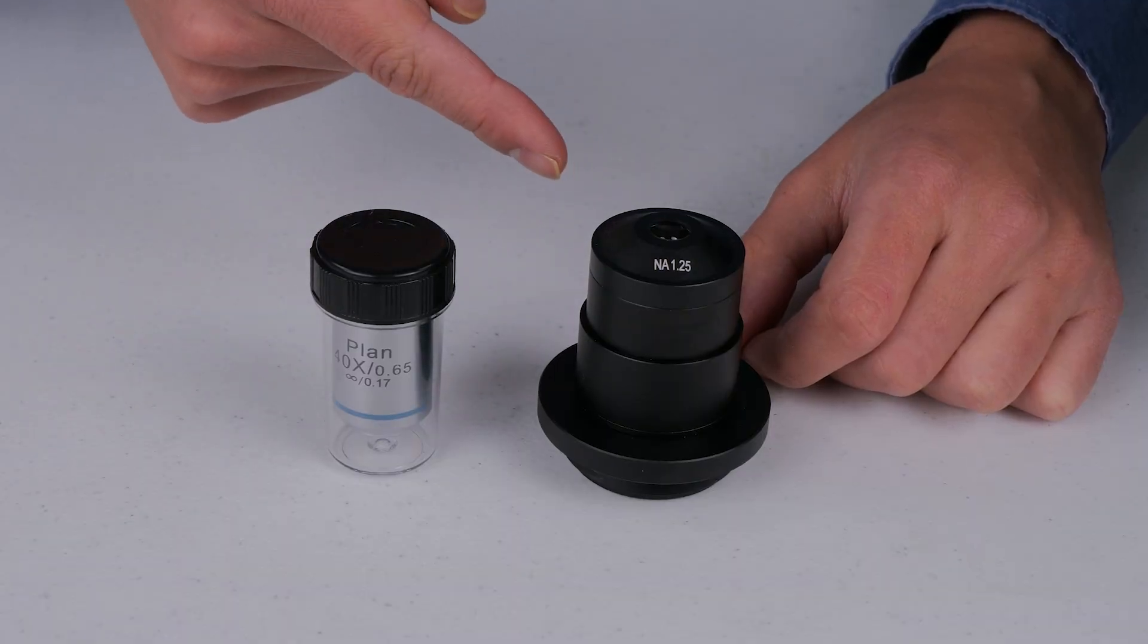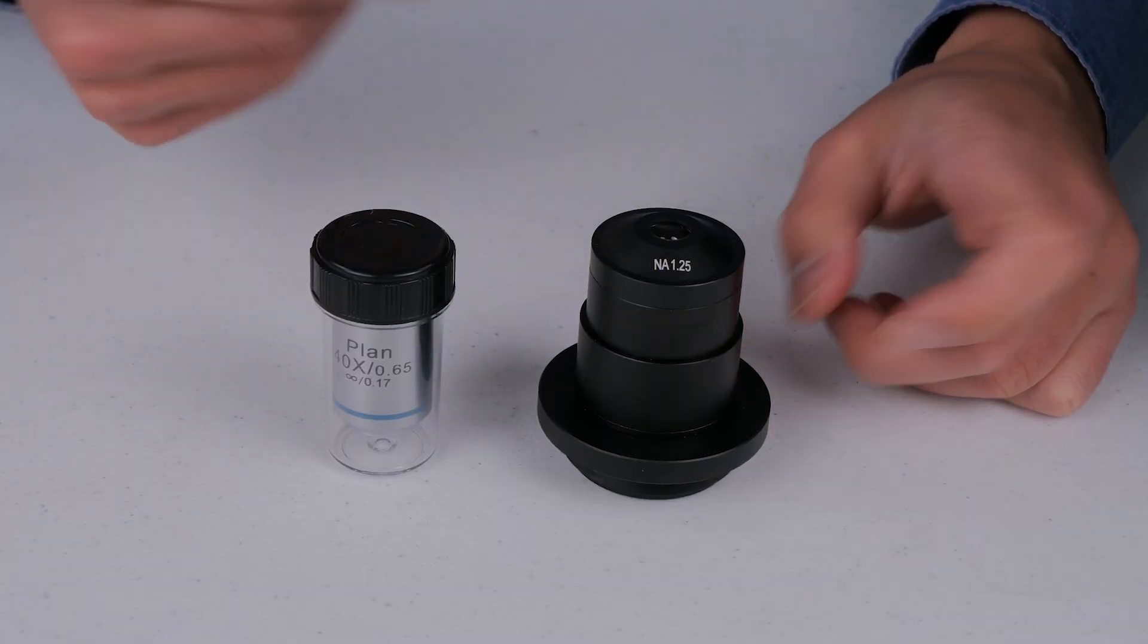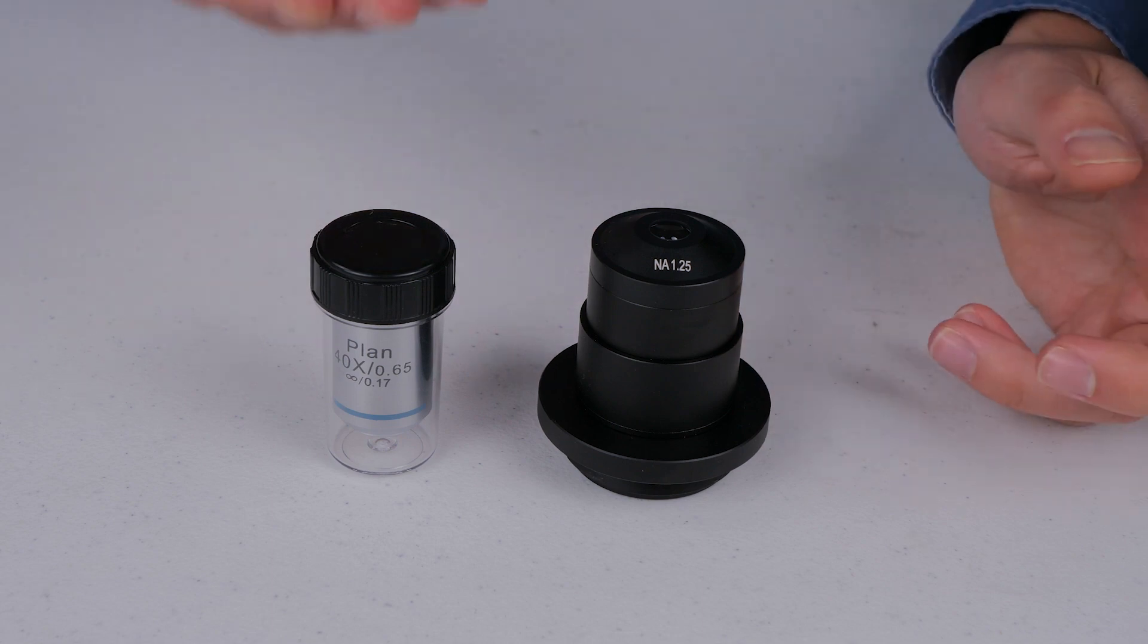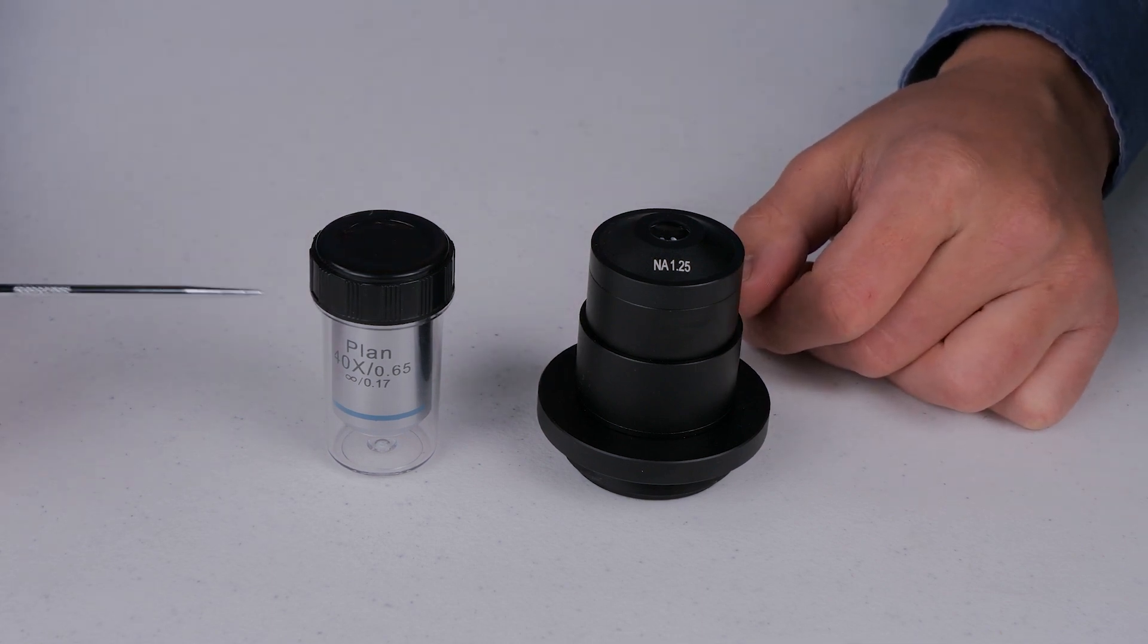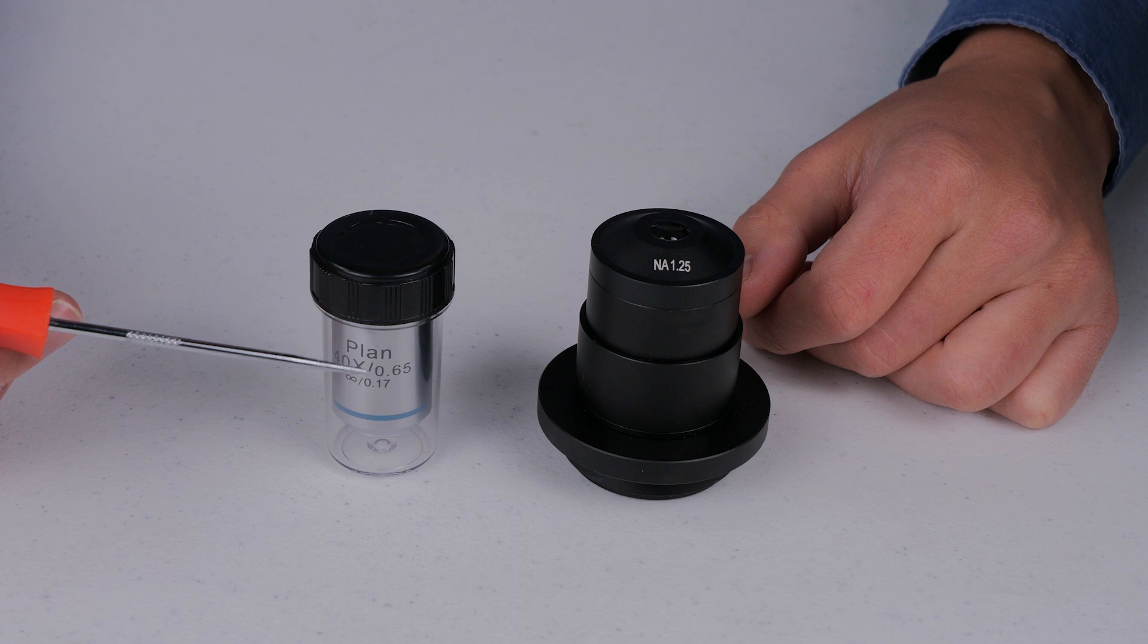So both the objective and the condensers say what their numerical apertures are, but why? Why is it important what the condenser's numerical aperture is? Well the thing to understand is that on an objective this numerical aperture is fixed. It's always going to be 0.65.